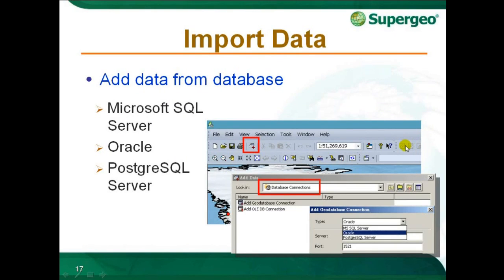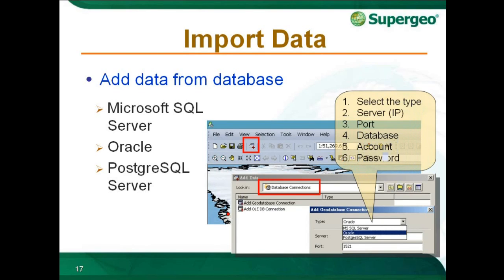In addition to Feature Layer and Raster Layer added by Add Layer, users can also connect to GeoDatabase and add data from a database. By Add Layer, from the look-in drop-down menu, click Database Connection to open the Add GeoDatabase Connection window. Double-click Add GeoDatabase Connection. MS SQL, Oracle, and PostgreSQL Server are provided for connection. Enter a server name, database name, username, and password, and click OK. Once the database is connected successfully, all layers of the connected database will be listed in the Add Data window, and you can import the selected layers into Desktop.